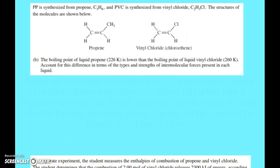Then it said that the polypropylene, PP, is synthesized from propene, and you see that here. And that the PVC is synthesized from vinyl chloride. All right, and so we see that here. Our similar looking structures. The difference is the fact that we have CH3 here and chlorine here. Now, the boiling point of propene is lower than the boiling point of liquid vinyl chloride. Account for this difference in terms of the types and strengths of IMFs, intermolecular forces, present in each liquid. So we've got to mention both.